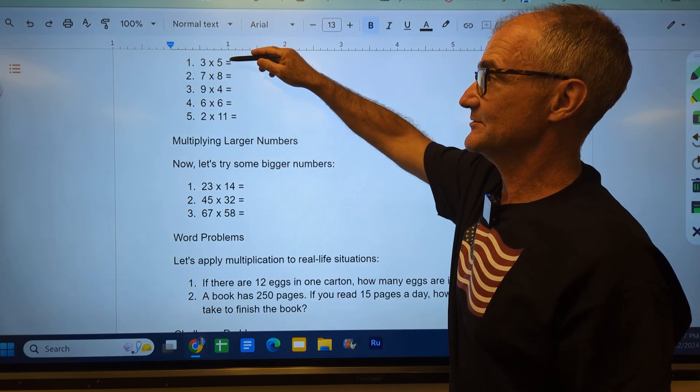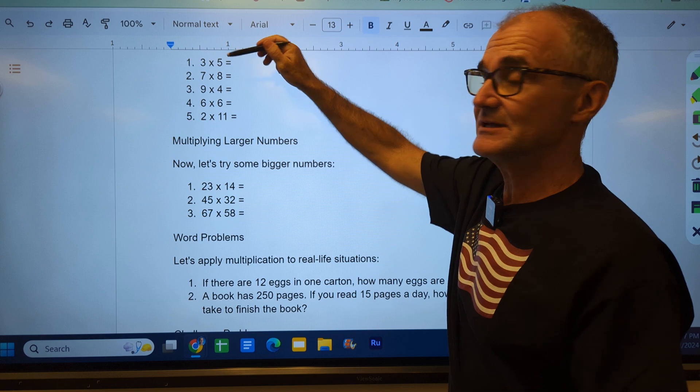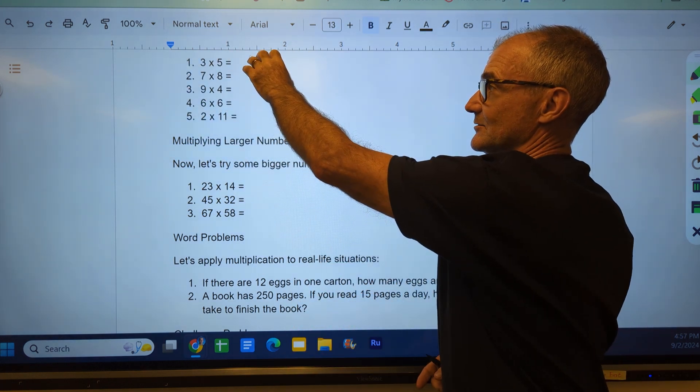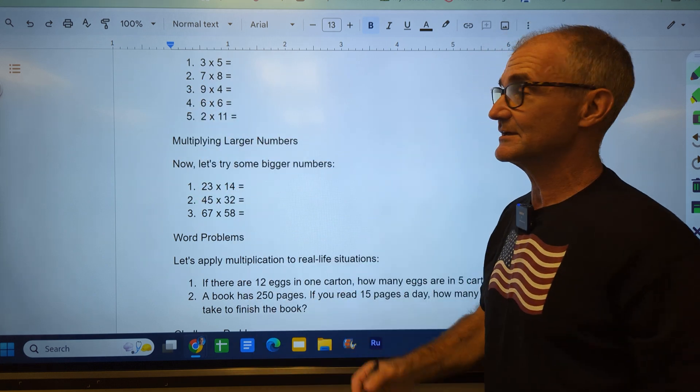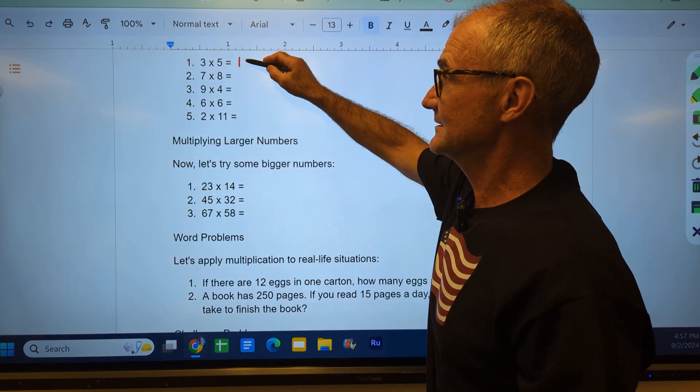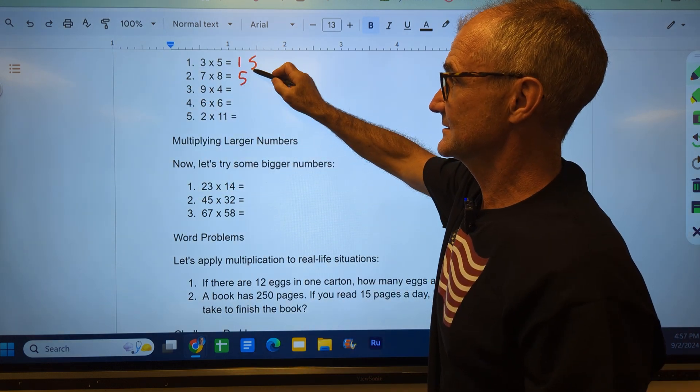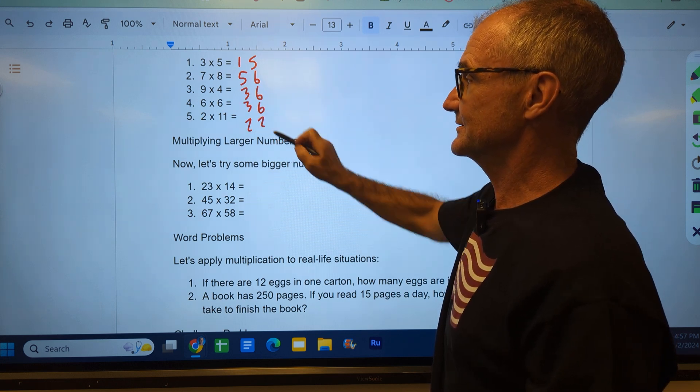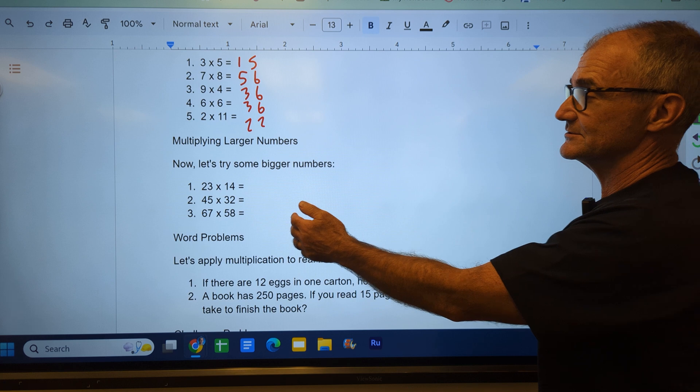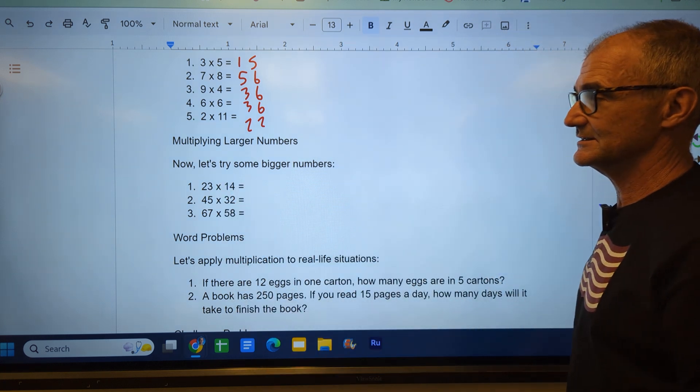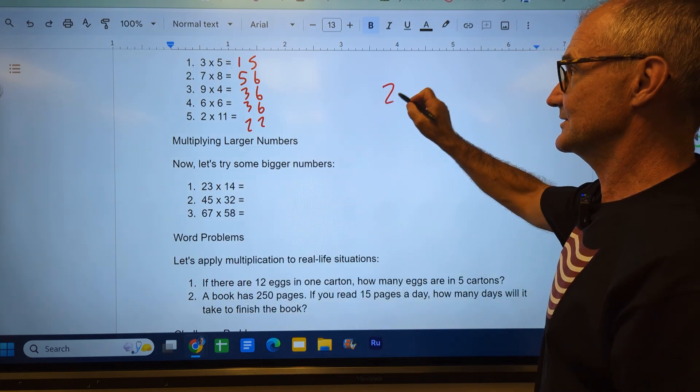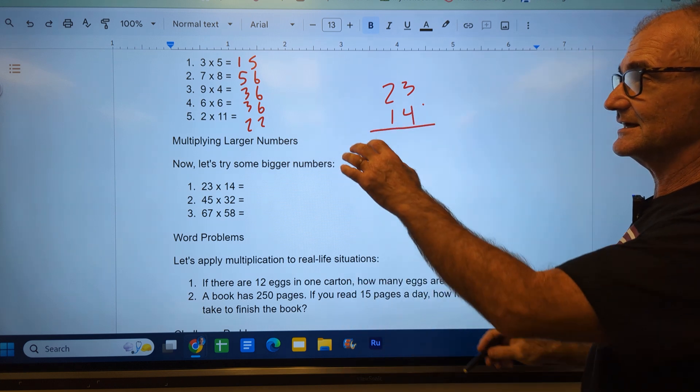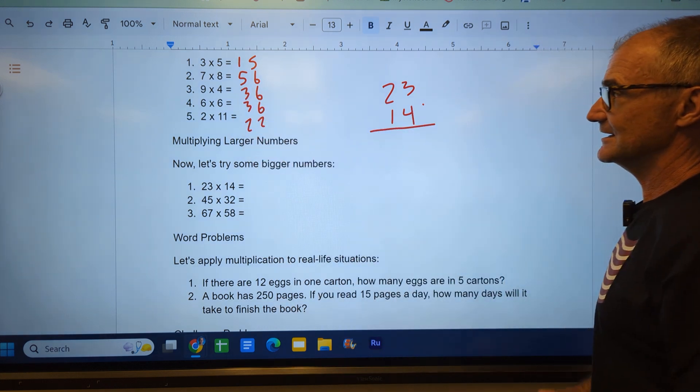Unpause the video. Right out of the table: 3 times 5, same as 5 times 3. Multiplication is commutative, meaning I can do this thing times that thing or that thing times this thing. It's going to be 15, 56, 36, 36, 22. And now we've got larger numbers: 23 times 14. I'm going to write these out.